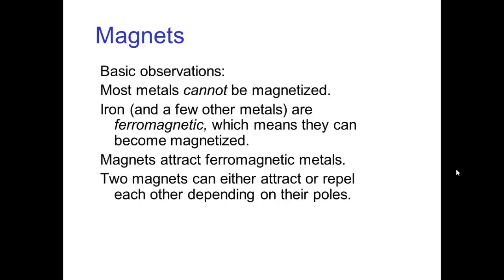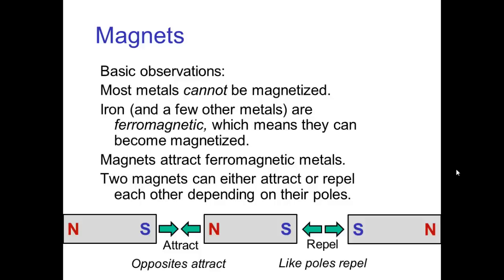Two magnets can either attract or repel each other, depending on the poles of the magnet. And magnets have a north pole and a south pole, and if we have a south pole on one magnet and a north pole on another magnet, those two will attract. So these opposites attract, much like electric charge.